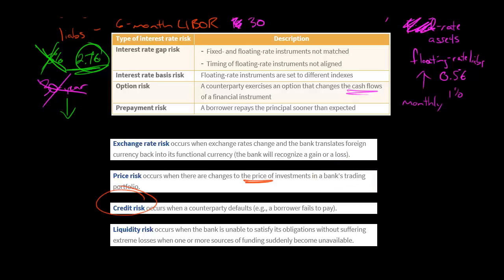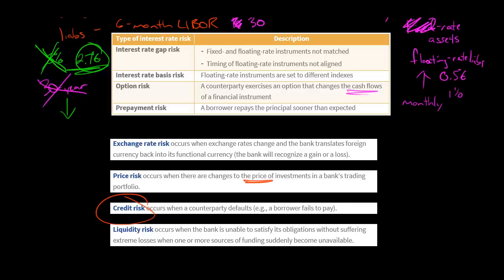Credit risk has to do with the issue of a borrower. Let's say you've got a 30-year mortgage and the borrower defaults — the borrower doesn't pay. That's a risk you're always going to have, particularly with subprime mortgages or similar instruments where there's even higher credit risk. There's always a risk that the borrower is not going to repay.